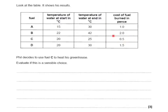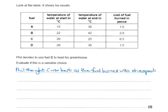Initially it does look like Phil made a good choice because the fuel burnt is the cheapest, it costs only 0.5 pence. However, what he may not have considered is that this only gave a 5 degree temperature rise, whereas other fuels gave 15 or 20 degree temperature rises. So the next thing we must do is look at the temperature rise for each of those fuels.